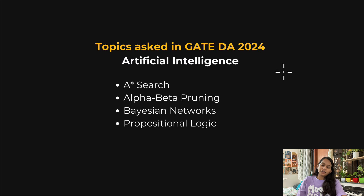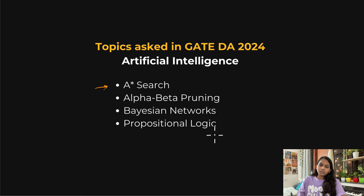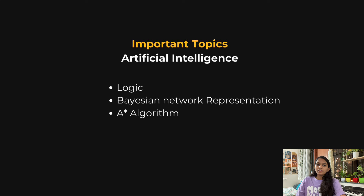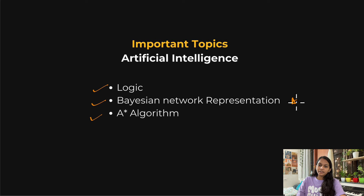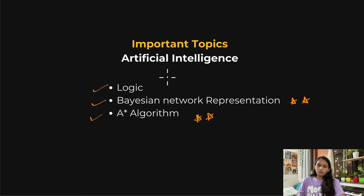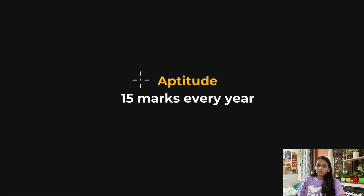For AI, the syllabus has multiple topics. In GATE DA 2024, questions were asked from A* search, alpha-beta pruning, Bayesian networks, and propositional logic — which is the same propositional logic studied in discrete math for GATE CSE. The important topics for AI are: mathematical logic, Bayesian networks, and the A* algorithm. Bayesian networks and A* algorithm are very, very important — most questions will come from logic, Bayesian networks, and A* algorithm. Please make sure to cover all three.